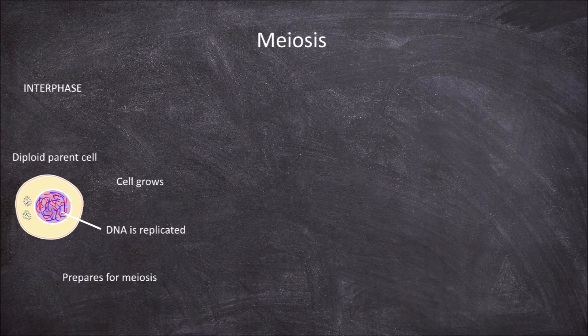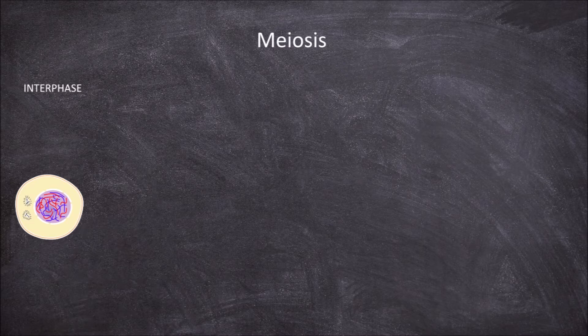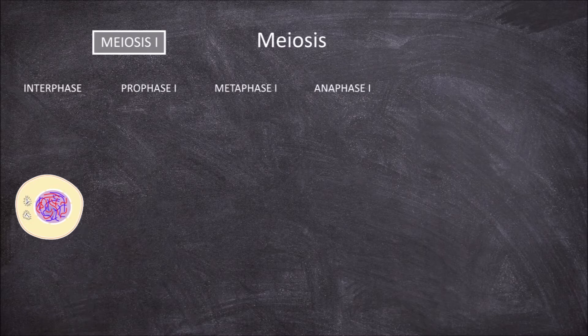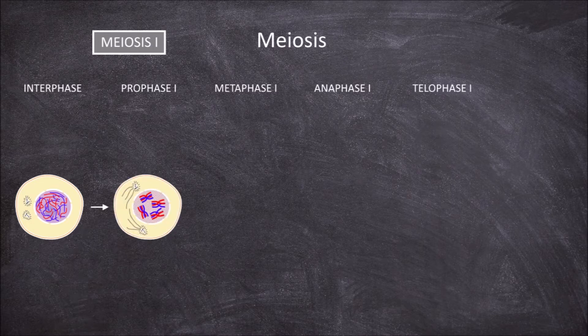There are two rounds of meiotic divisions involved in meiosis: meiosis 1 and meiosis 2. There are four phases in meiosis 1 — prophase 1, metaphase 1, anaphase 1, and telophase 1. The first phase of meiosis 1 is prophase 1.